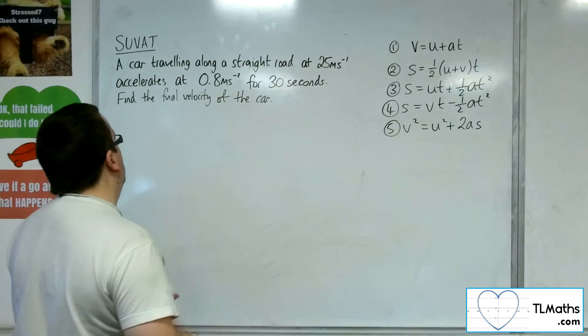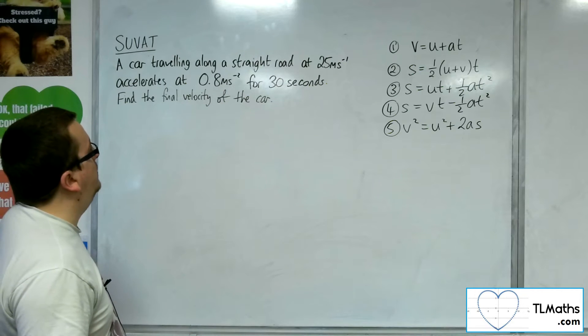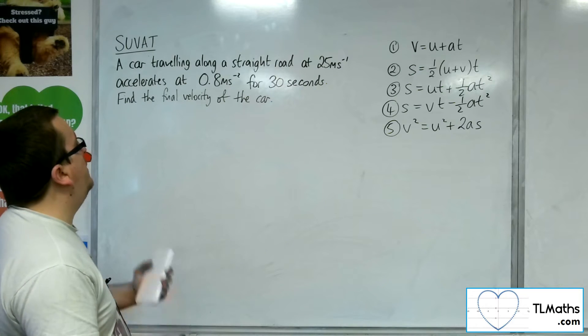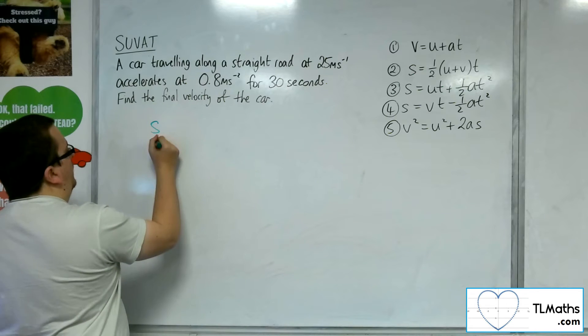So we've got a car travelling along a straight road at 25 metres per second, accelerates 0.8 metres per second per second for 30 seconds. Find the final velocity of the car. So we go straight in with Suvat.